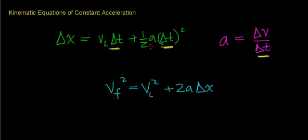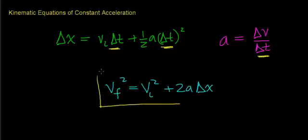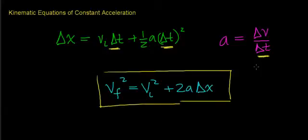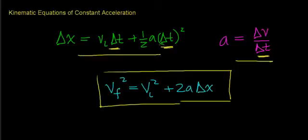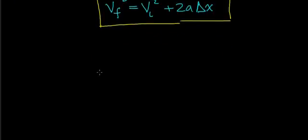To find the distance an object travels given the first equation, you need to know the time during which the object's traveling. Likewise, to find the change in velocity of an object given its acceleration, you need to know the change in time. This new equation allows us to eliminate the need to consider the time parameter. To begin, let's start with rearranging our definition of acceleration.